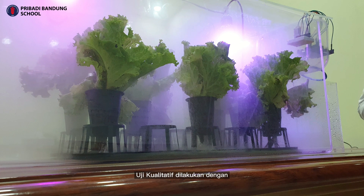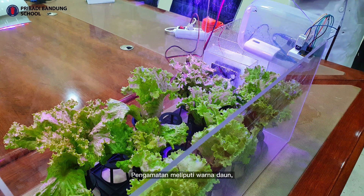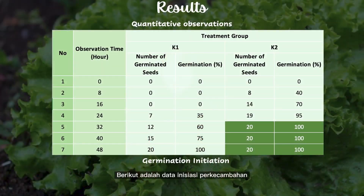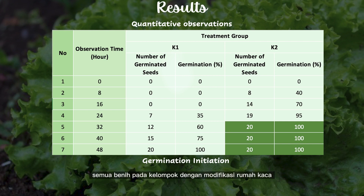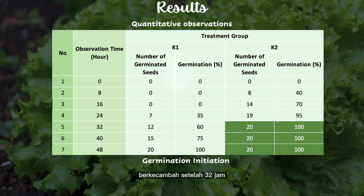The qualitative test was conducted by observing the visual appearance of the plants within two weeks. Observations include the color of the leaves, the plant's height and thickness, and the plant's freshness. The following is the germination initiation data using two different treatment groups. It is shown that all of the seeds in groups with the modified greenhouse had already started germinating after 32 hours, while the seeds in control groups started to germinate after 48 hours.